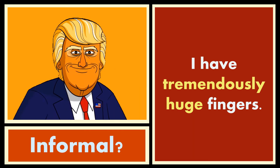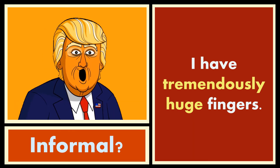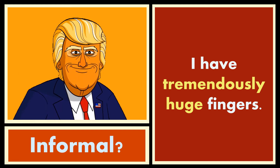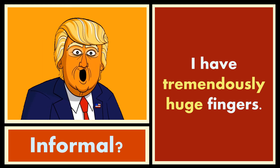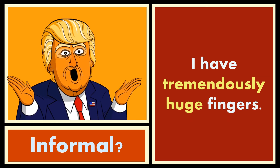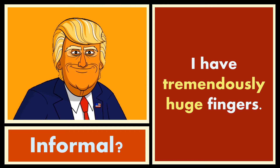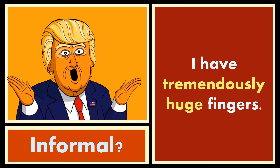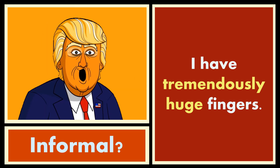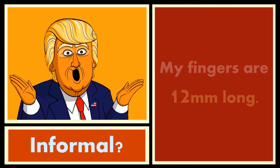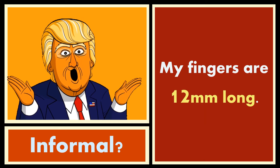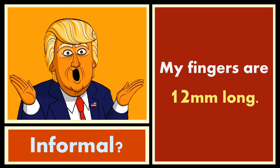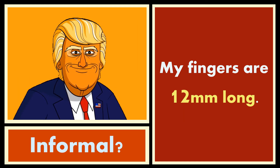With respect to the words sounding informal, you might have a sentence like 'I have tremendously huge fingers.' The word 'huge' sounds really informal and again it's ambiguous. So what do we do to make it more concrete and academic? We use a measure: 'My fingers are 12 millimeters long.' Now the reader has a very clear sense of exactly how long the fingers are.